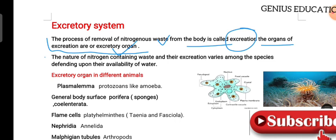The next point: the nature of nitrogen-containing waste and their excretion varies among species, depending on the availability of water. The nitrogenous waste excretion form differs depending on the species, as you can see below.